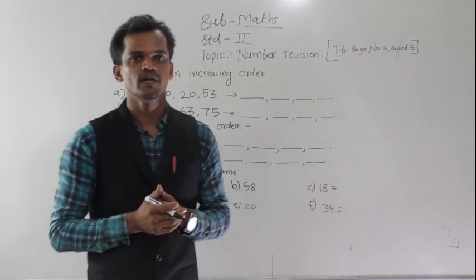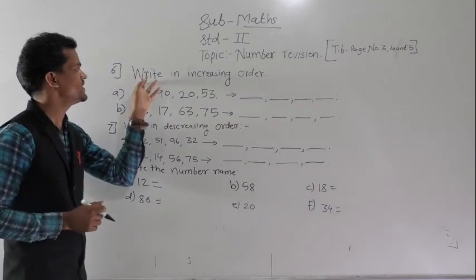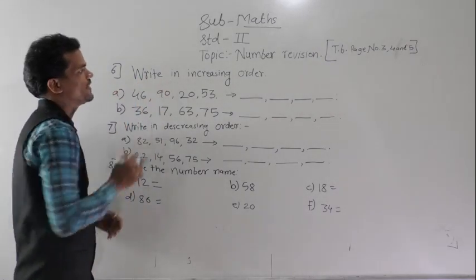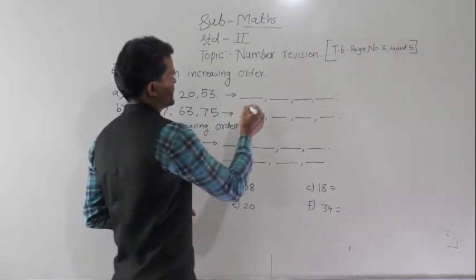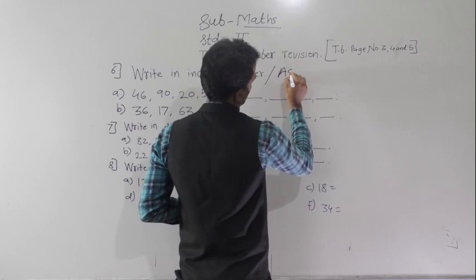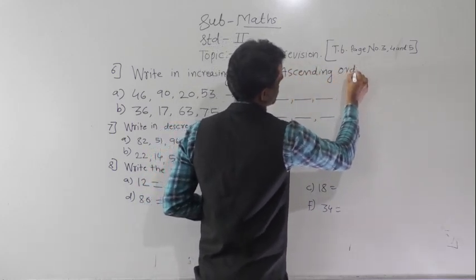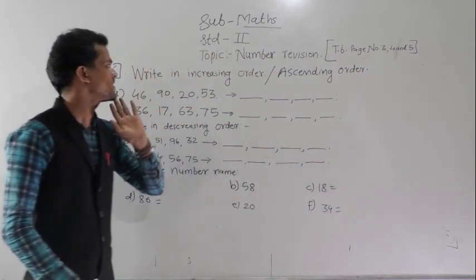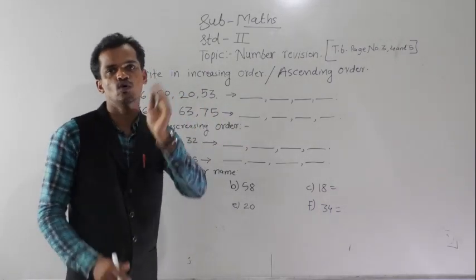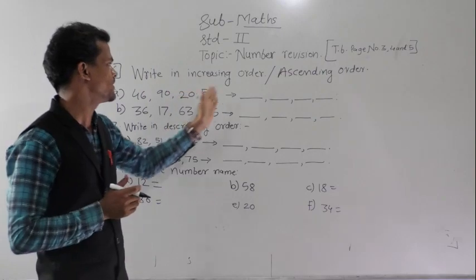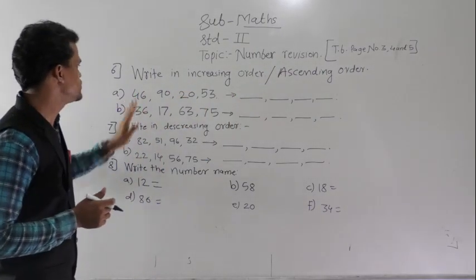Today we will solve from example 6. The instruction is to write in increasing order. Another name for increasing order is ascending order. Ascending order means we have to arrange numbers from smallest to greatest order. First we have to write the smallest number and then the greater number.